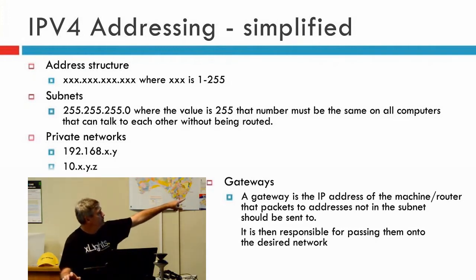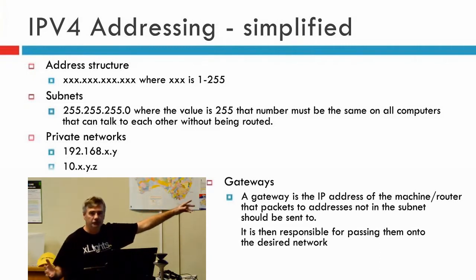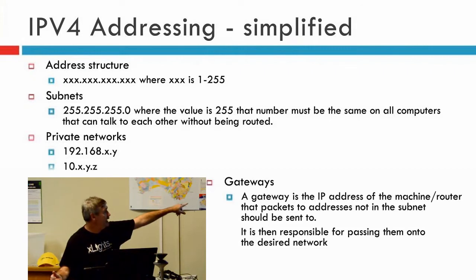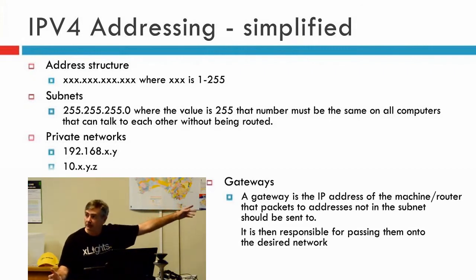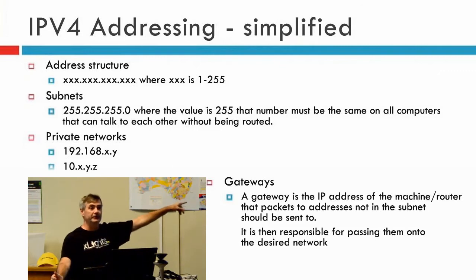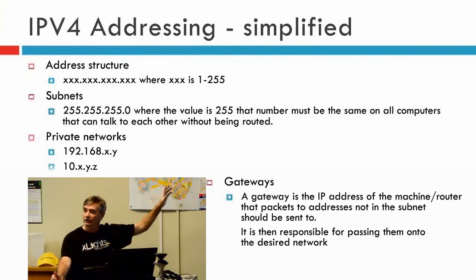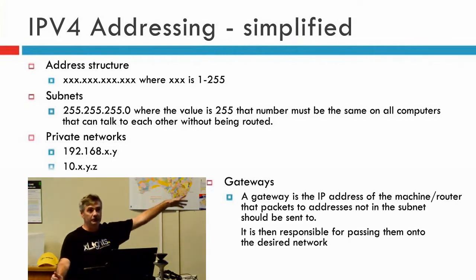Private networks — typically you'll use 192.168 and two other numbers, or 10 followed by three other numbers. They're private networks, so there is no machine on the internet that has that IP address. It's an address you can use locally in your network, and pretty much everyone uses some sort of IP address like that.